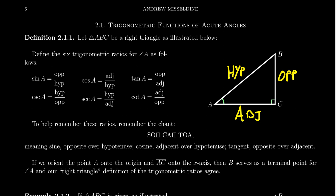Because of the reciprocal identities, we just need to focus on sine, cosine, and tangent. If you look at a scientific calculator, it probably only has sine, cosine, and tangent buttons — if you need secant, just compute cosine and take its reciprocal. To help remember this, people use the SOHCAHTOA mnemonic. Sine is opposite over hypotenuse: S-O-H. Cosine is adjacent over hypotenuse: C-A-H. Tangent is opposite over adjacent: T-O-A.